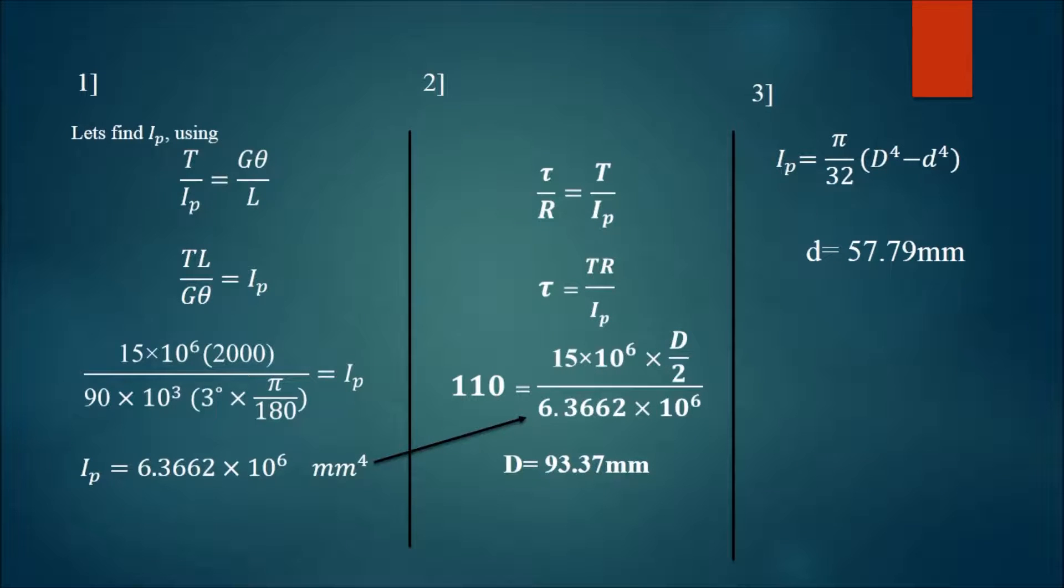Here you can see I have done it in three steps. In the first step, I used T/Ip = Gθ/L, then put in the values. You can see that for θ, I have written 3° × π/180. I am confirming that I will put all values in Newton and mm units. I get the value of Ip, and the same value of Ip in the second step I have used to get the diameter D.